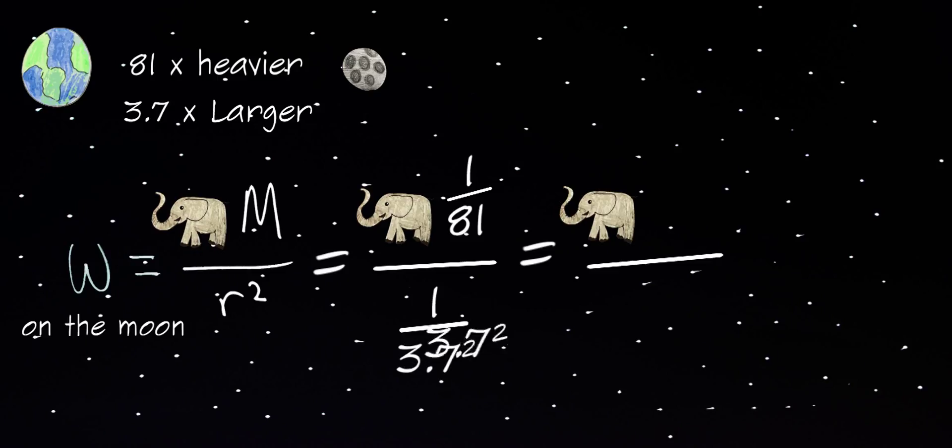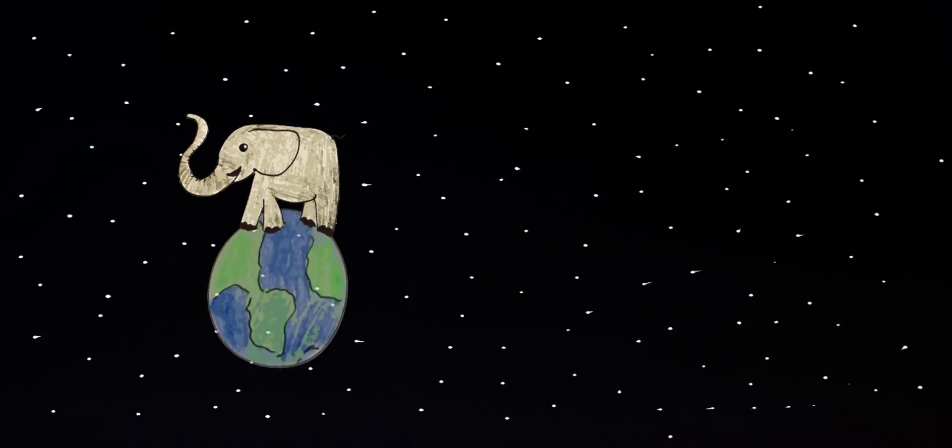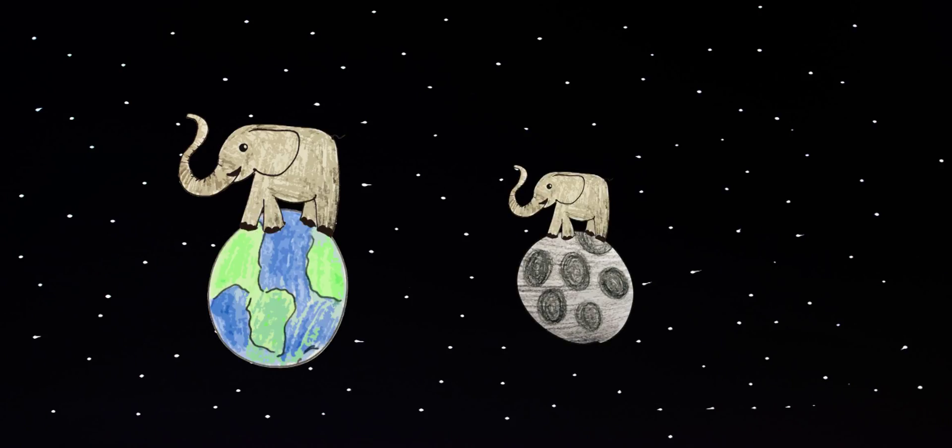So the elephant's weight on the moon would be equal to 3.7 squared divided by 81, which is one sixth of the elephant's weight on Earth. So if an elephant weighs a little over 5 tons on Earth, it would weigh a little less than a ton on the moon, which is what a giraffe would weigh.